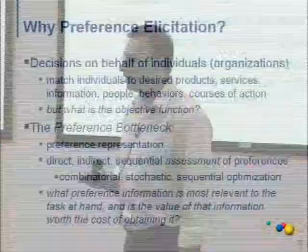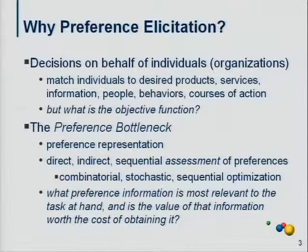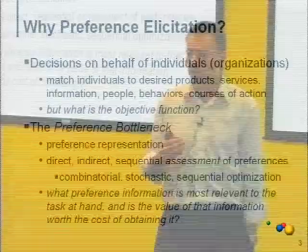A real key question is: why preference elicitation? What's so important about this problem? Well, in AI, when we think about decision making under uncertainty, we usually have in mind that we're making decisions on behalf of some individual or organization. One way to think about it is that we want to match individuals to products that they desire, information, services, other individuals, or when thinking about planning, match them to the appropriate courses of action or behaviors they would find desirable.